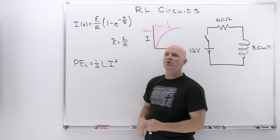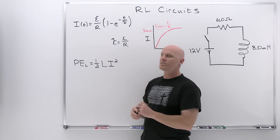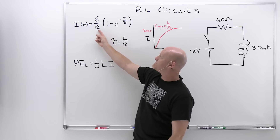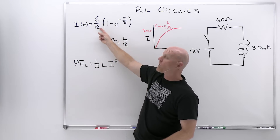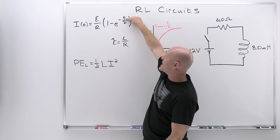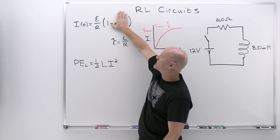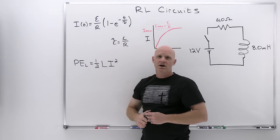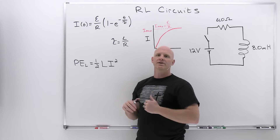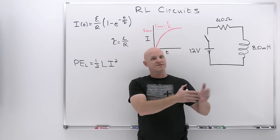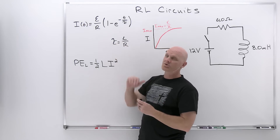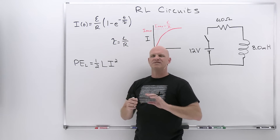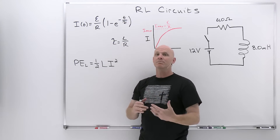Looking at the time dependence of the current in an RL circuit, the equation looks similar to what we saw with a charging capacitor in RC circuits. The current asymptotically approaches the maximum value — epsilon over R, or delta V over R — as predicted by Ohm's law. At very large times, e to the negative infinity goes to zero and that term vanishes, leaving only the Ohm's law current. Just like RC circuits, once past five time constants, we consider the circuit to have reached its maximum current — about 99.3% of the max.